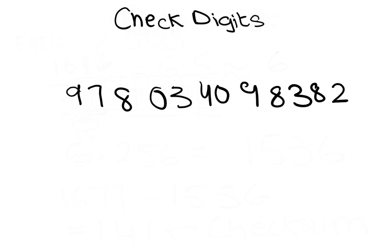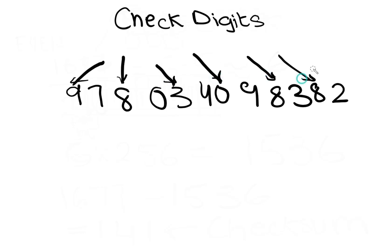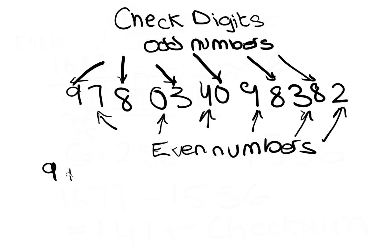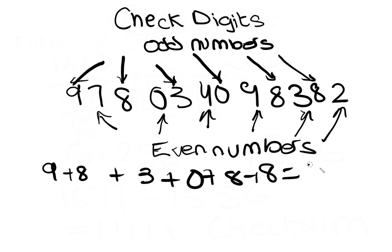We will use the same ISBN as in the figure earlier. We are not going to consider digits as odd or even by their numeric value. Instead, the first digit position is treated as odd, then we skip the next and treat the following as odd, and so on. So in this case, 9, 8, 3, 0, 8, and 8 are the odd-position digits, and the rest — 7, 0, 4, 9, 3, and 2 — are the even-position digits. Adding all the odd-position digits: 9 + 8 + 3 + 0 + 8 + 8 = 36.